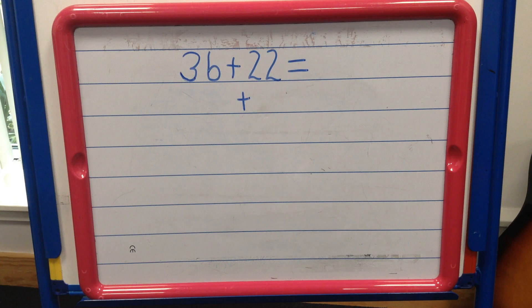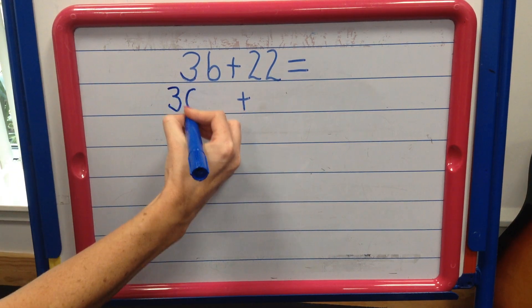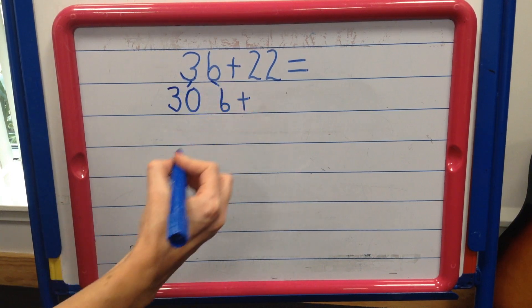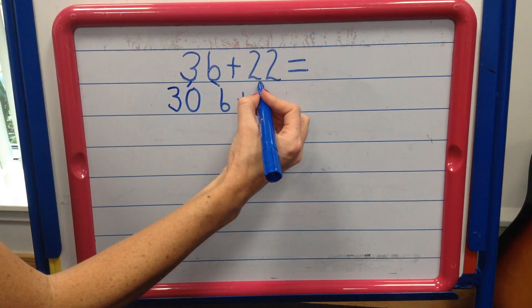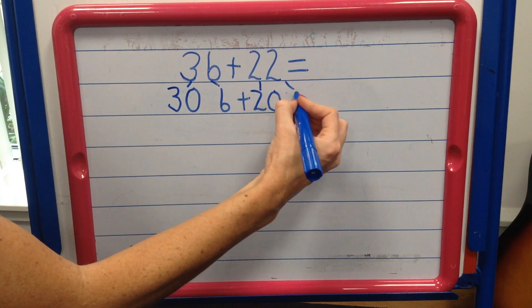Step 1. To solve this calculation using this strategy, the first thing we should do is use our knowledge of partitioning to break the numbers into their place value. For example, if we partition 36, it becomes 3 tens and 6 ones. If we partition 22, it becomes 2 tens and 2 ones.